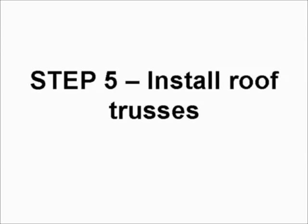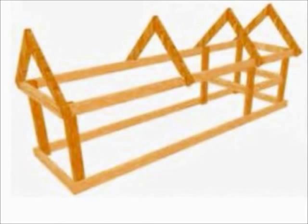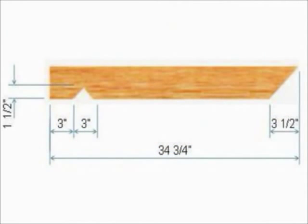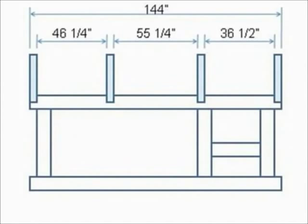Step five, install roof trusses. In total there are eight roof trusses cut from two by four measuring 34 and three quarter inches. These need to be cut as shown in this diagram. Once cut, attach them to the upper frame using four nails per connection.